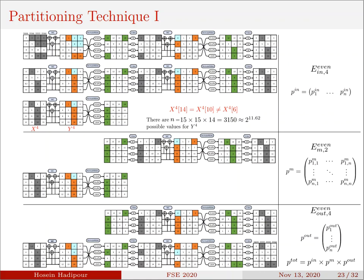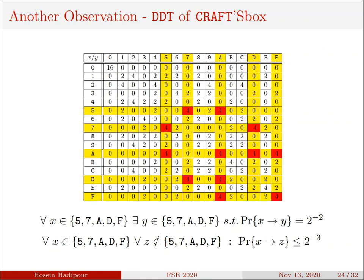Given that there are in total 3,150 possible values for the internal differences, and we were not able to compute the differential effect for all of them using our computational resources, we limited the intermediate active nibbles to be in a special set. Referring to the CRAFT S-box, we choose this set, which consists of 5 differences including 5, 7, A, D, and F, because of two reasons. Firstly, for each x in this set, there exists a y in the set such that the probability of x to y is maximum.